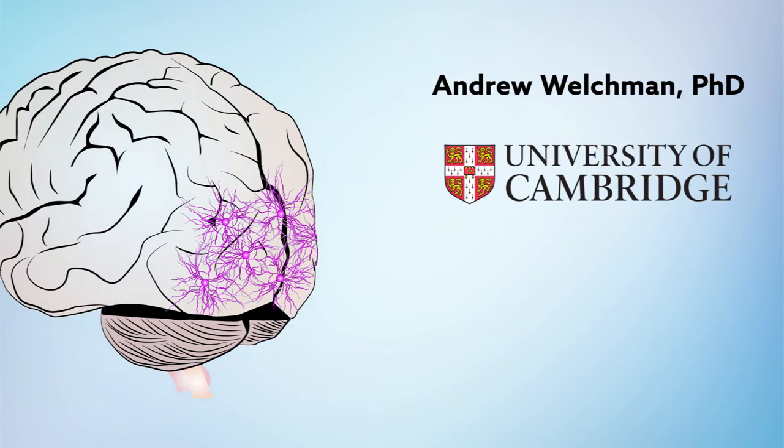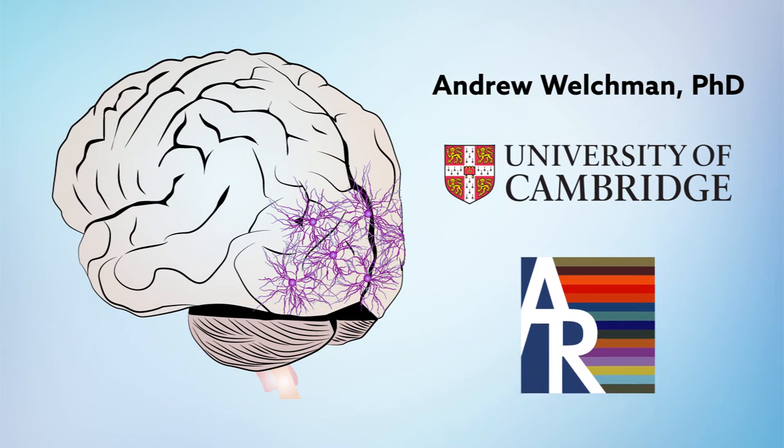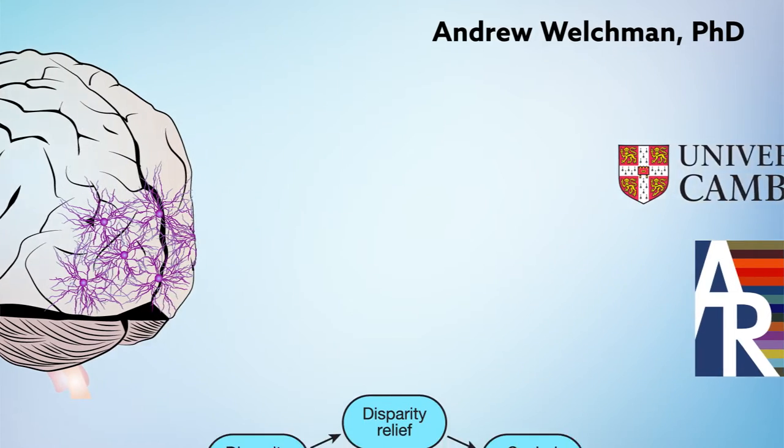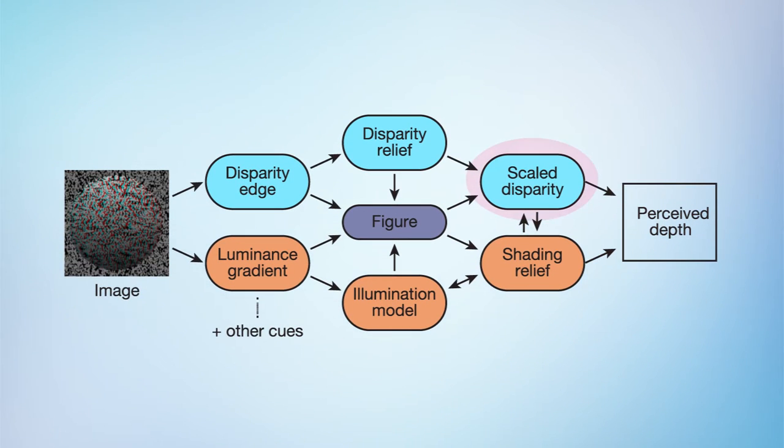But as Cambridge's Andrew Welchman explains in a recent article in Annual Reviews, how neurons put all this information together to produce 3D views is not yet clear, and studying this process is difficult. Change one aspect and you've likely changed another. Creative methods, however, can overcome these challenges.